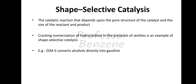Zeolite is an example of a shape-selective catalyst. Cracking and isomerization of hydrocarbons in the presence of zeolites is carried out using this process. ZSM-5 is an example of a shape-selective catalyst — ZSM-5 converts alcohol directly into gasoline.